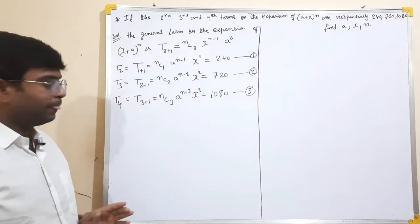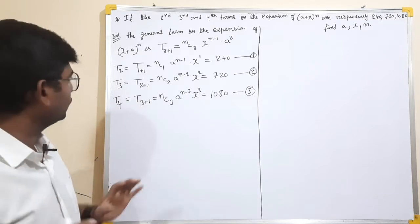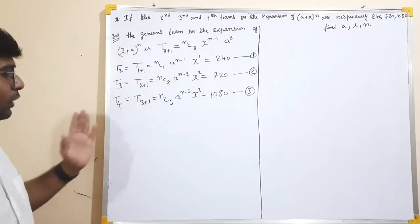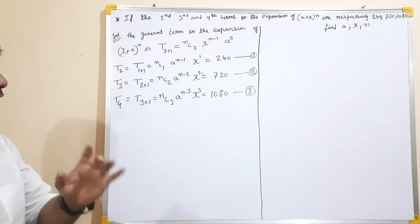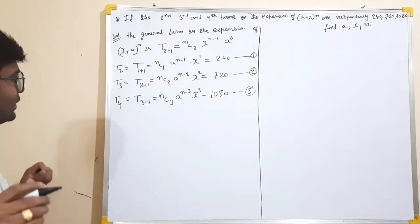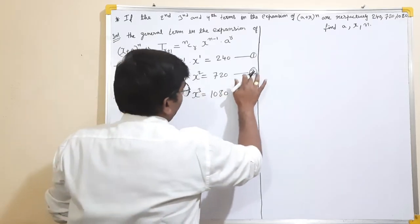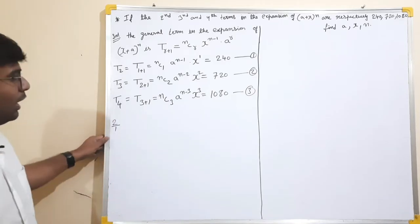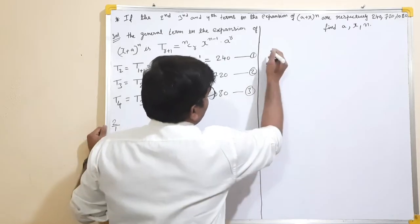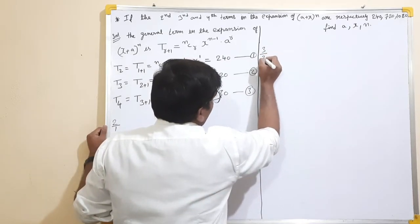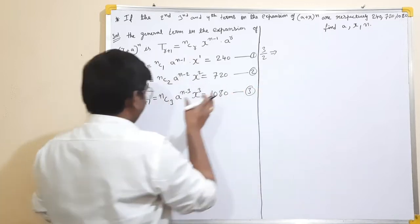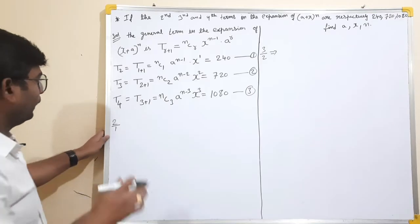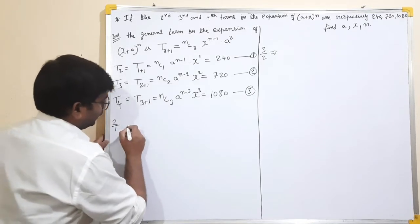Now we will solve this by division. First, we divide the second equation by the first equation to get equation 4. Next, we divide the third equation by the second equation to get equation 5. This division method is very simple.